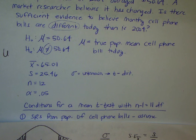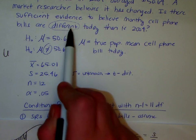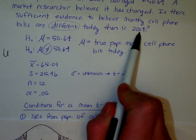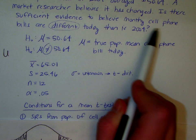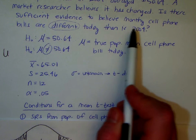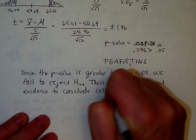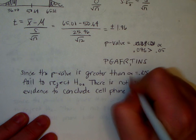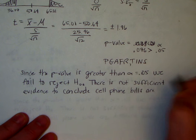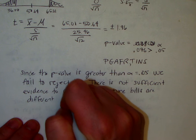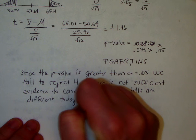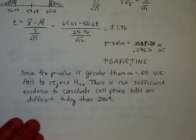Is there sufficient evidence to believe monthly cell phone bills are different today than in 2004? So, we've just shown that there is not sufficient evidence to believe monthly cell phone bills are different than they were in 2004. So, I'm just going to copy that. There is not sufficient evidence to conclude cell phone bills are different today than 2004. And there, that's it. That ends our problem. We've made our conclusion.